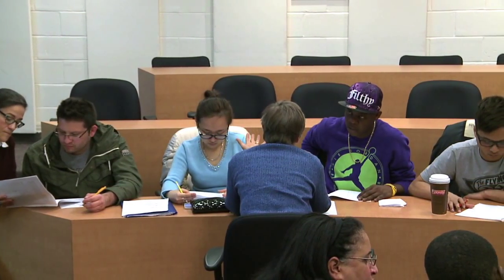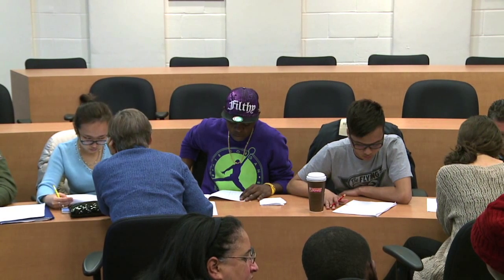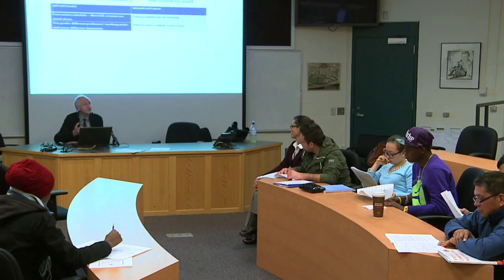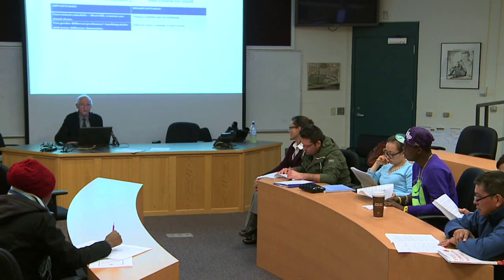On page two of the handout you'll see different kinds of ESL courses. The first kind we call standalone — it's simply one course by itself. We have four different kinds of courses at Bunker Hill, and none of them is better than the other. The standalone courses have a convenient schedule, and many students like having different teachers so they can experience different teaching styles and have different classmates in every class. The disadvantage is that if you take four standalone courses, they might be a little confusing — you'll have different homework assignments and different professors.